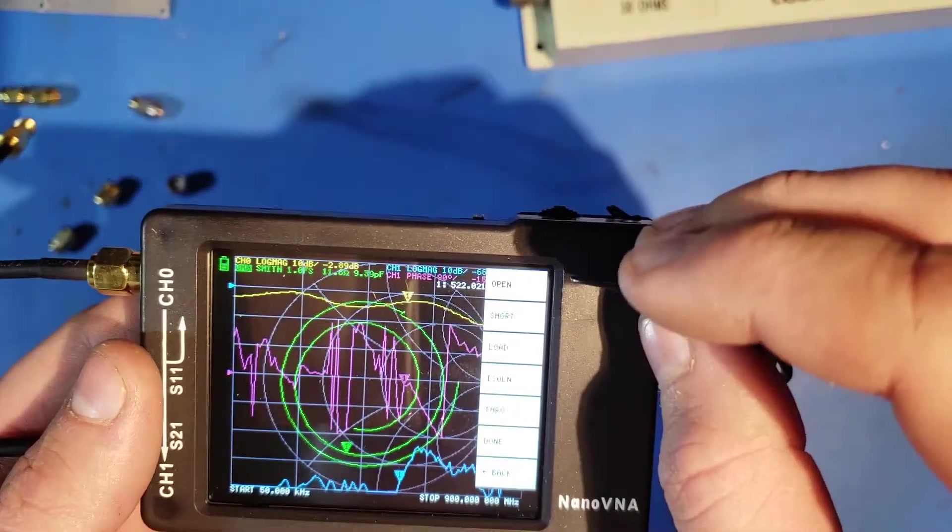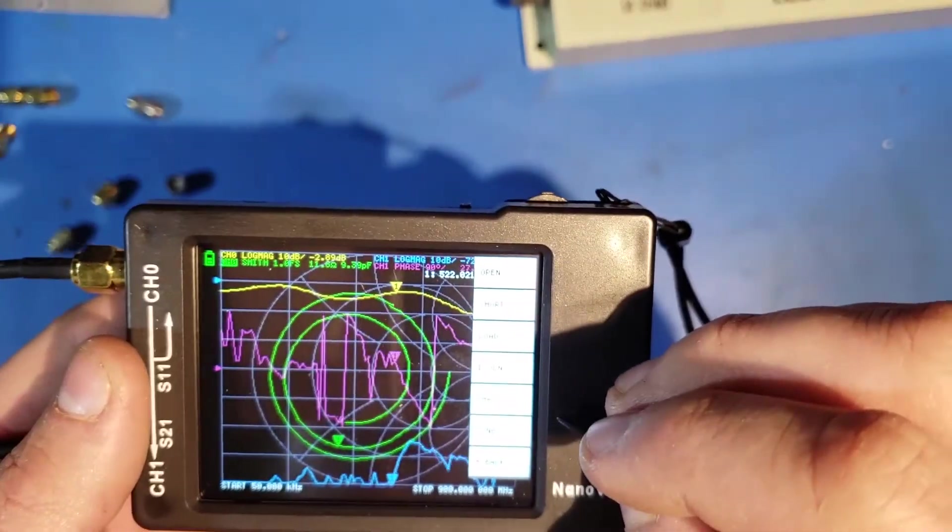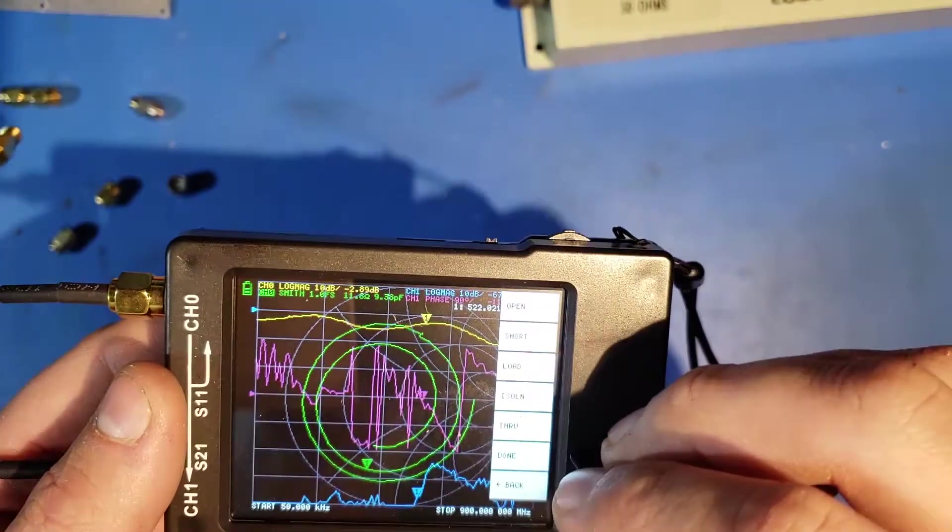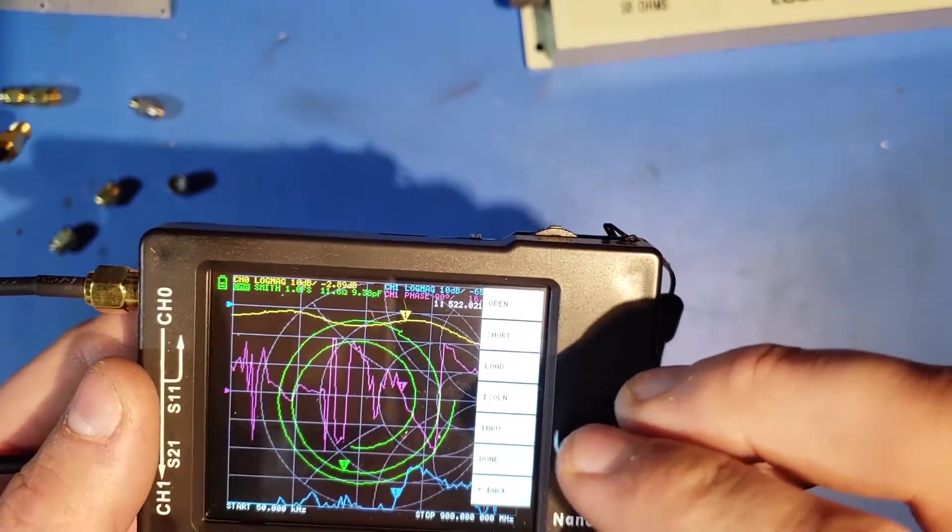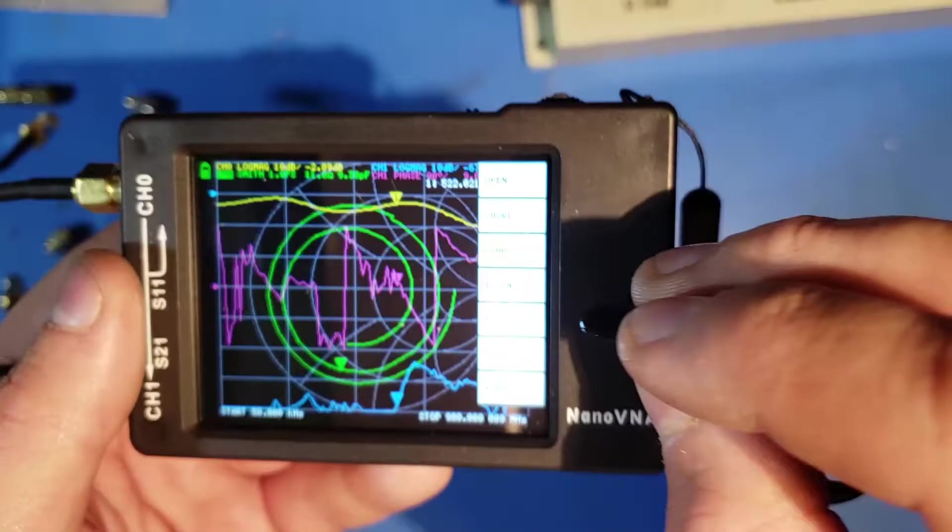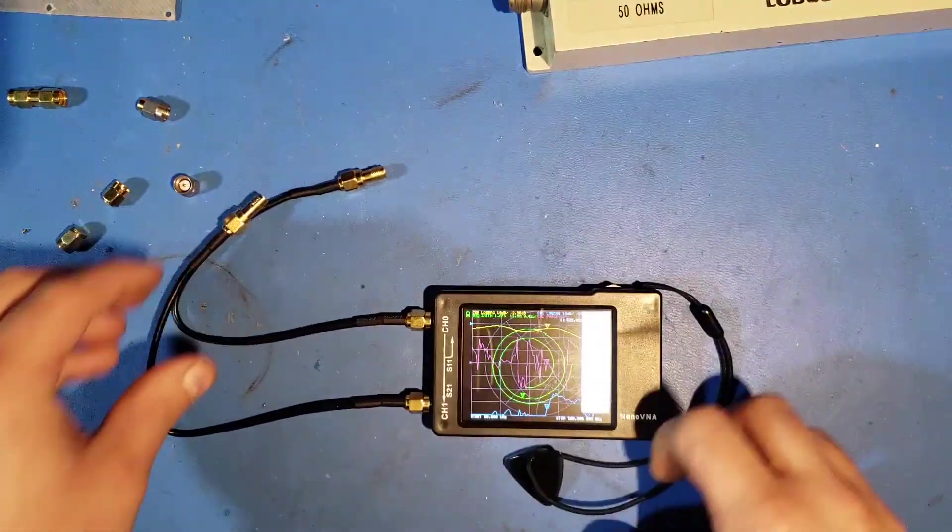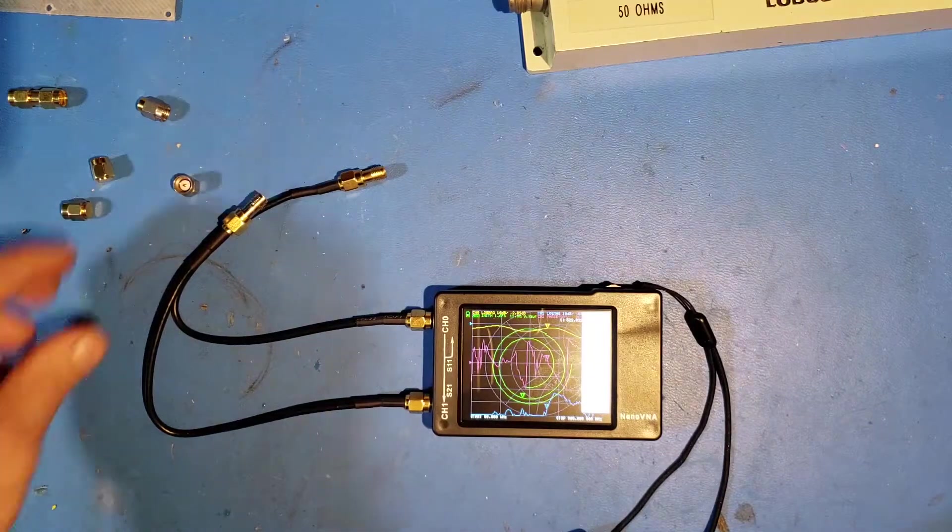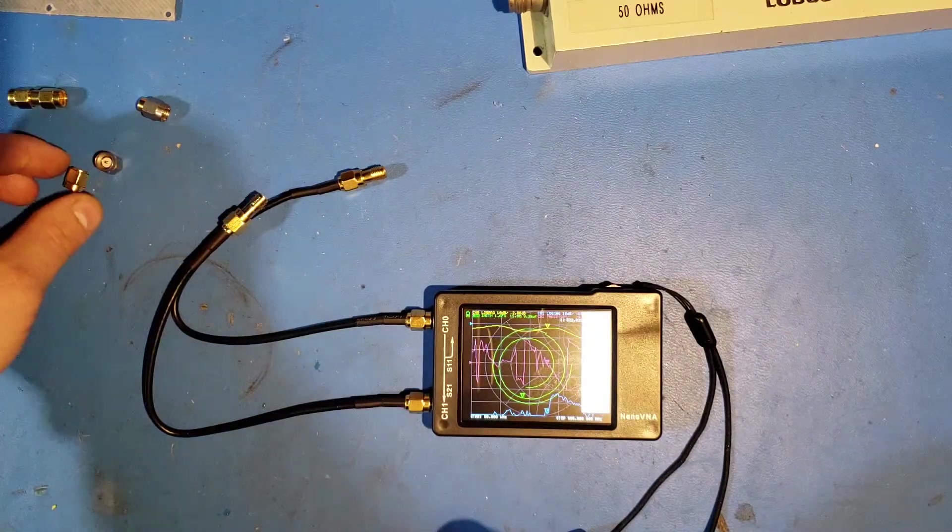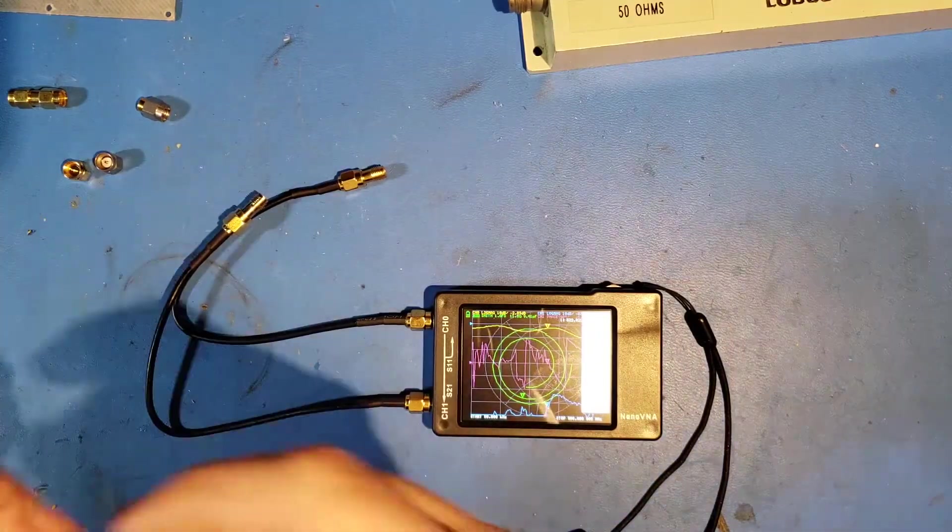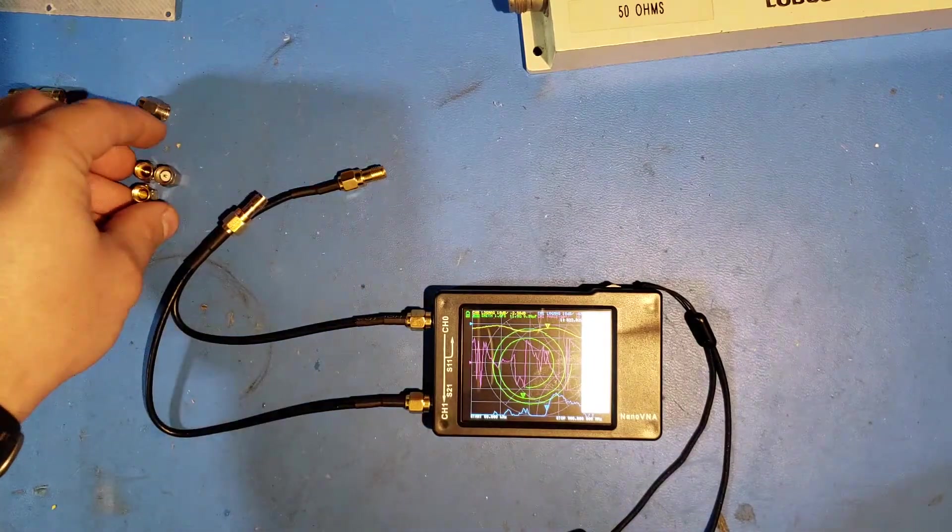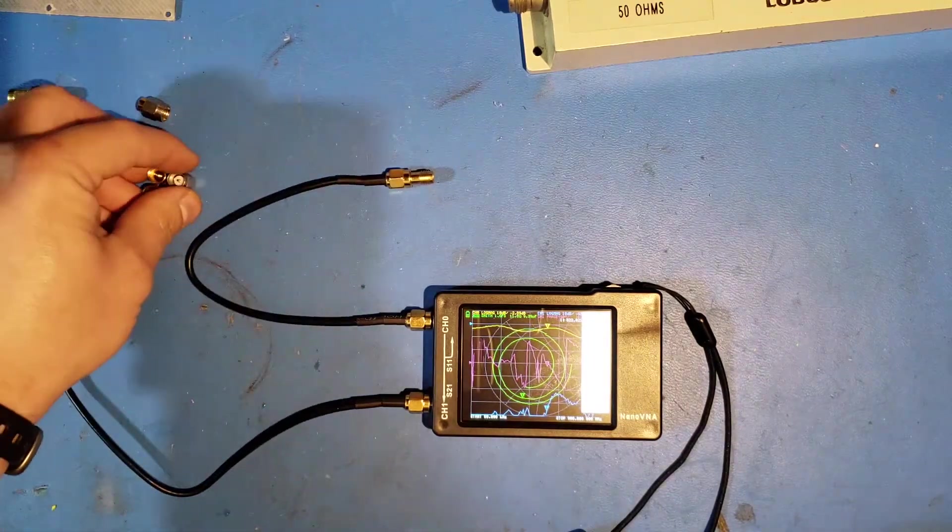If you're going to do a two-port calibration, you'll need to do open, short, load, and through at a minimum. That's called a SALT, and you'll also probably want to do this extra isolation, ISO-LN step. For this calibration, we'll start and we'll do the SOL part of this, and hopefully we won't be SOL on getting a good calibration, despite that this doesn't really come with the right cal kit to do this properly.